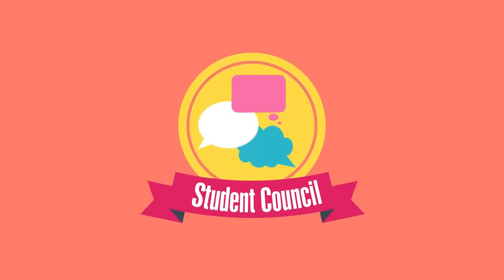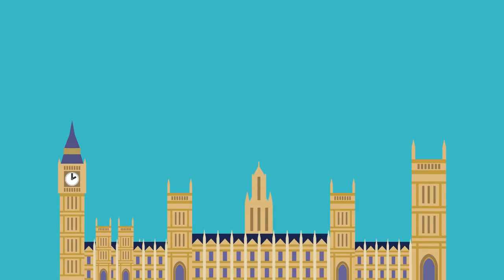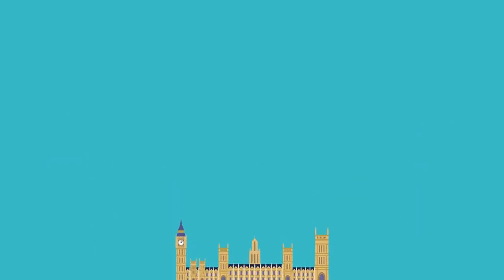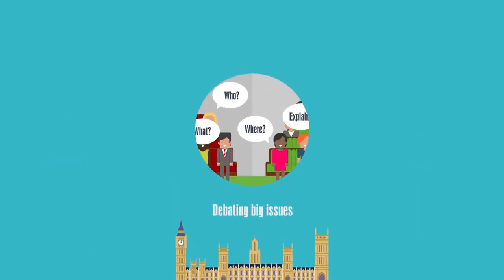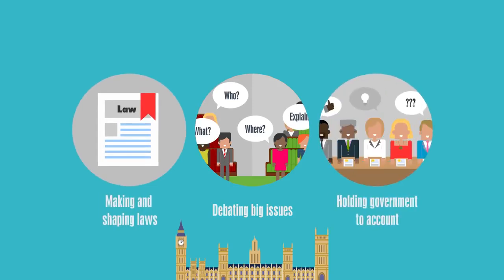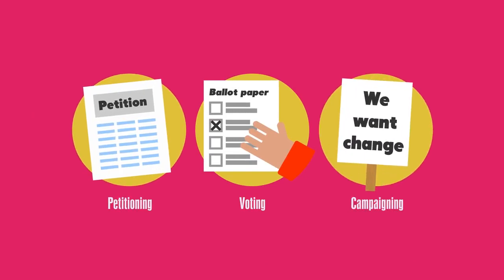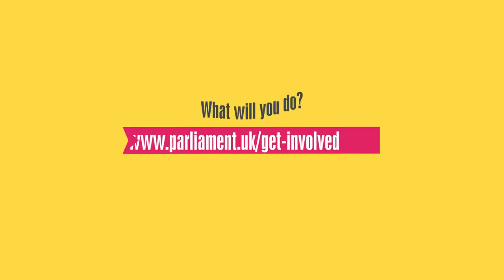And don't forget, you can get your voice heard in school or college too, by joining or starting a student council, a bit like a mini-parliament. Parliament sits at the heart of UK democracy, debating the big issues of the day, making and shaping laws, and holding the government to account. By voting, petitioning, campaigning and more, you can also get involved with the work of Parliament. What will you do?